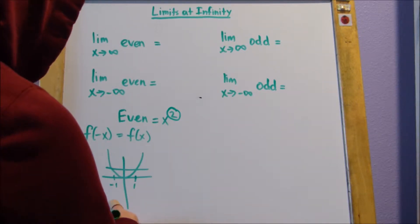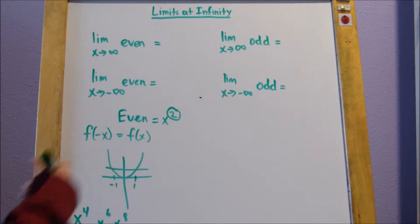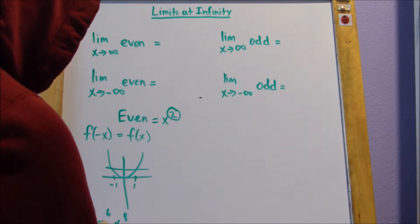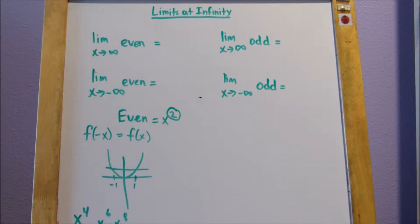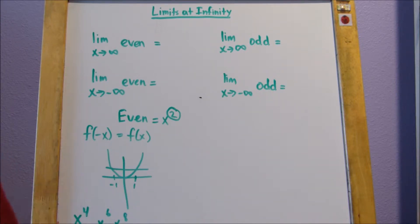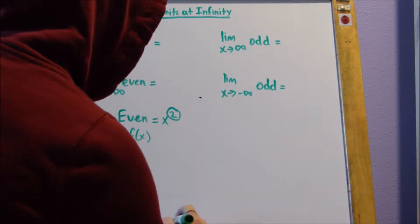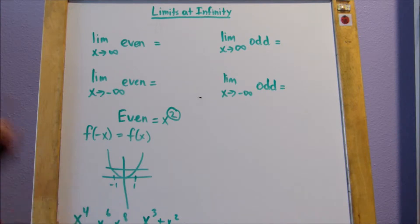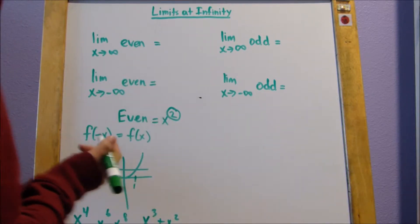Another way to think about even functions is that their highest exponent is even — like x to the 4th, x to the 6th, x to the 8th. There are some exceptions. For example, x to the 4th plus x cubed plus x squared is still even because the highest exponent is even. But x cubed plus x squared is going to be odd because the highest exponent is x cubed.